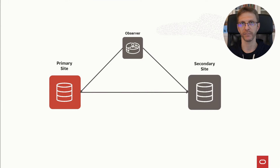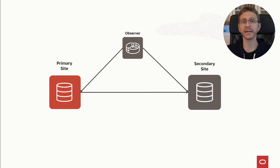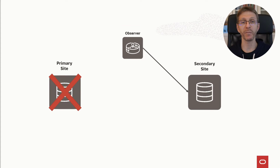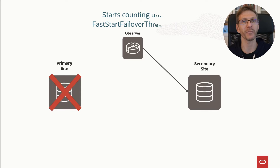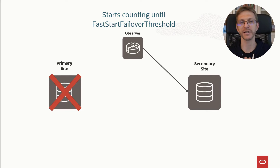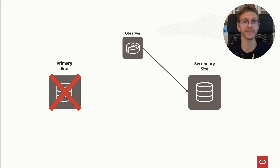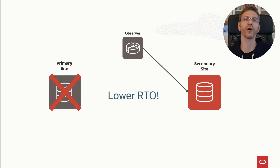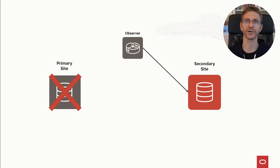Fast start failover puts an observer monitoring the configuration. It will do regular pings to the primary database and to the standby database, and it acts as a quorum. When you have a problem with the primary database, the observer will detect that the primary database is not there and will start a timer — the fast start failover threshold — that you can configure to meet your RTO objectives. Whenever the observer reaches the threshold and still cannot contact the primary database, it will do an automatic failover and promote the standby database as the new primary. By having this threshold, the RTO is much, much lower, and you can configure it to trigger automatic failover in a matter of seconds. This is really another level of high availability compared to a manual intervention.